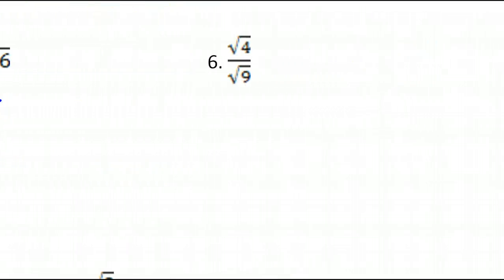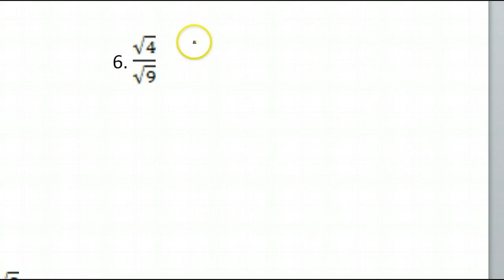But now let's look at number 6. Well, look, both of these are perfect squares. And these are square roots. So the square root of 4 is 2. Square root of 9 is 3. So kabam! Done and done.